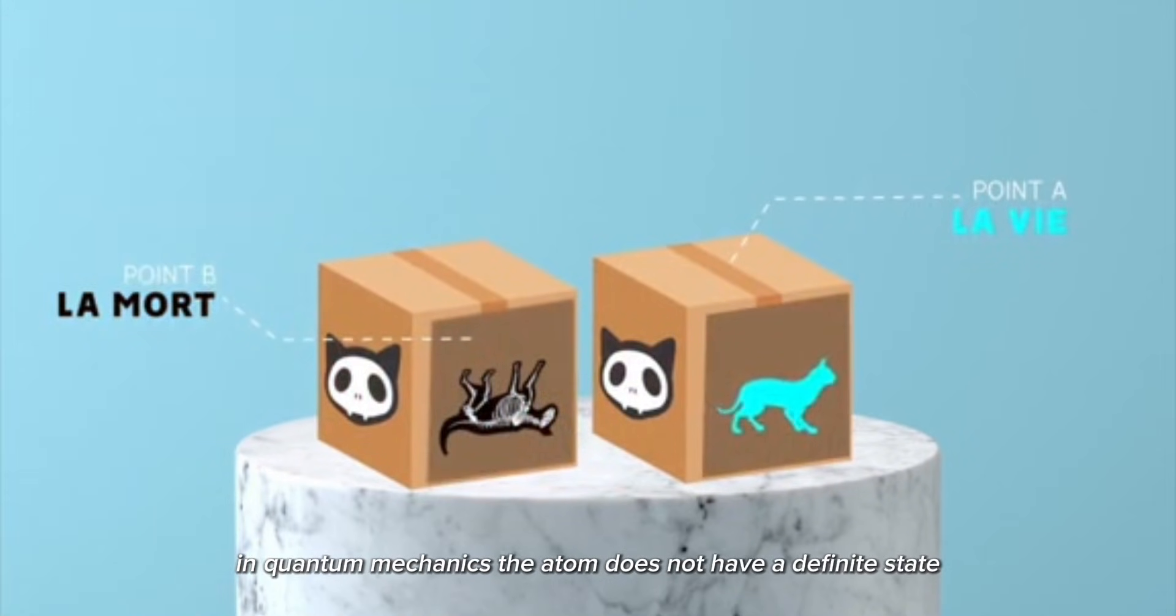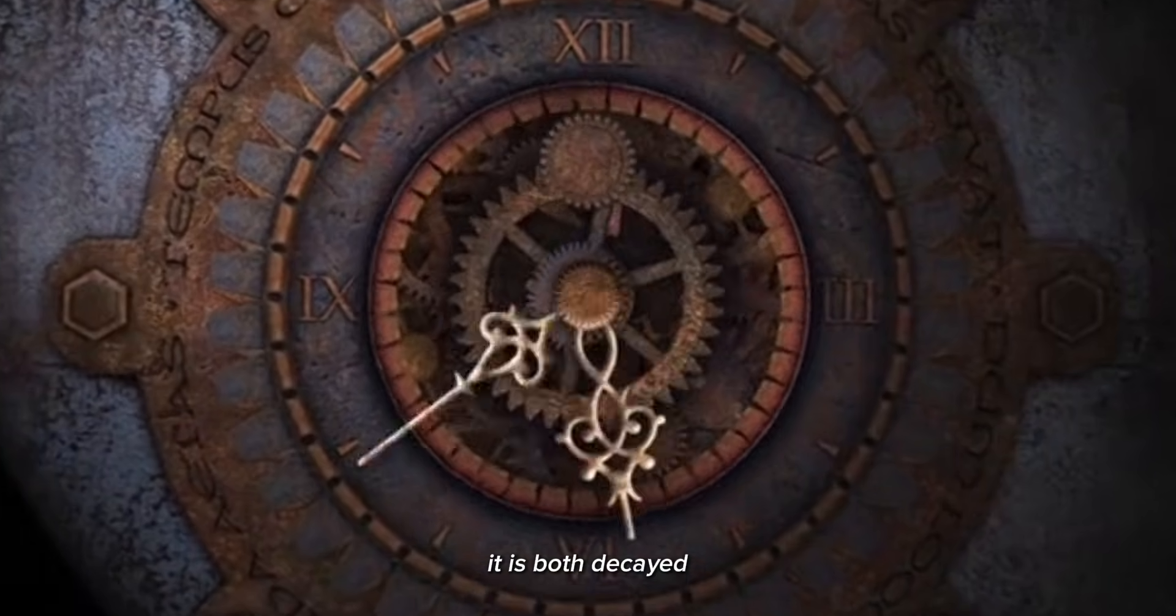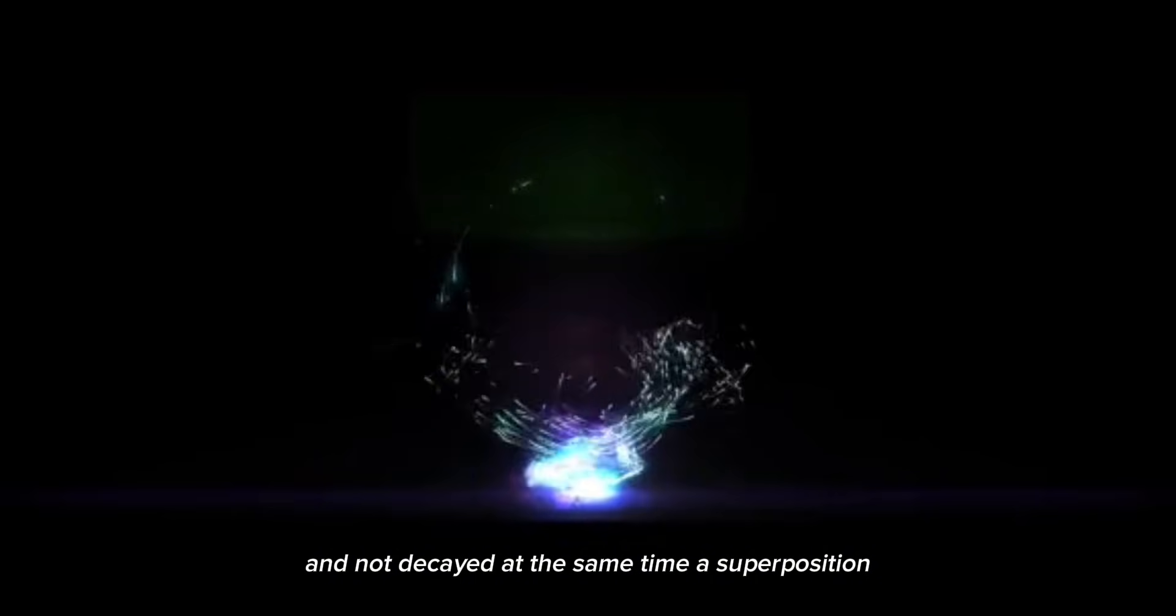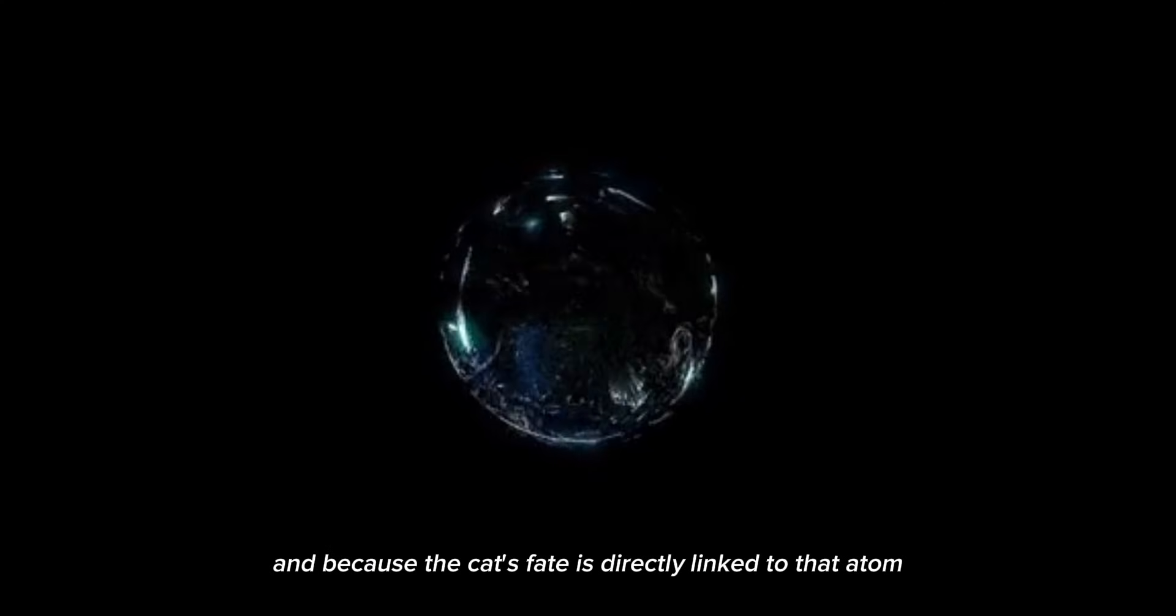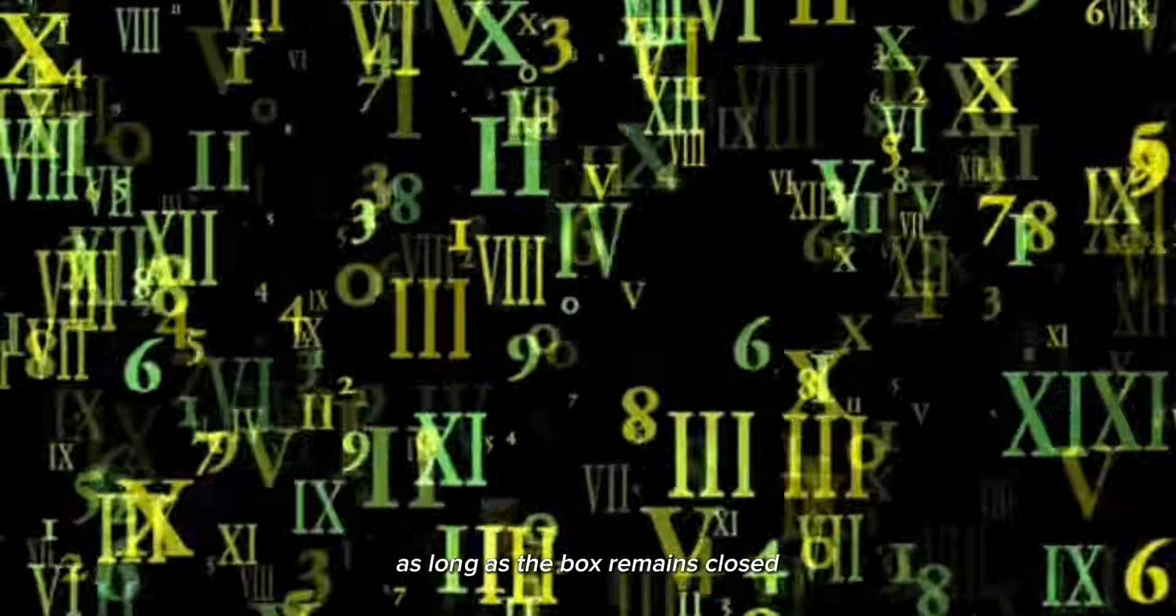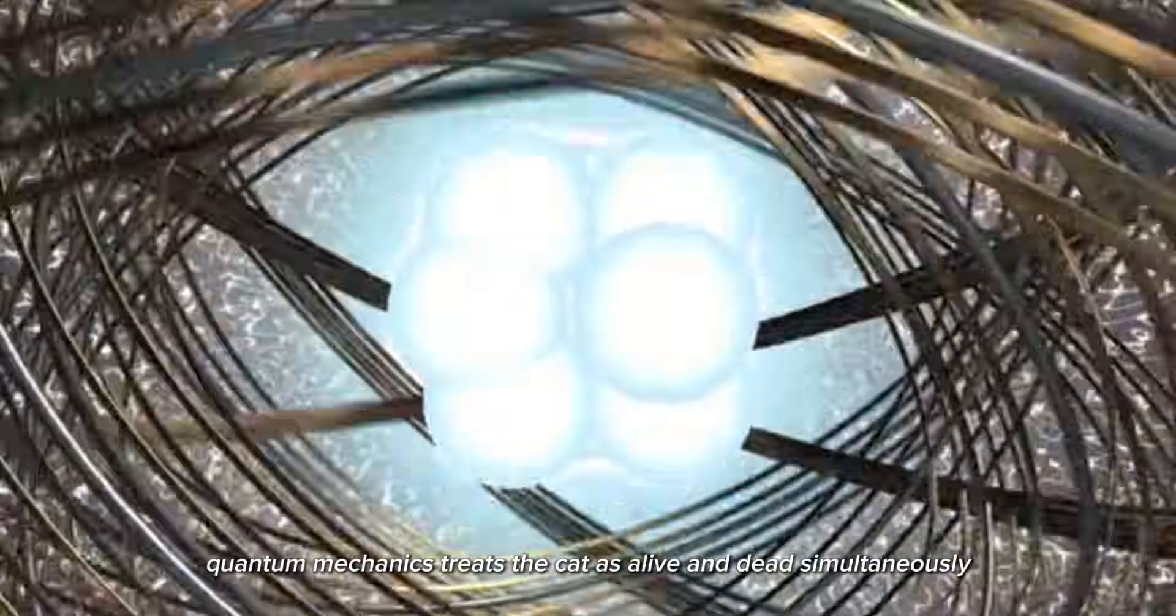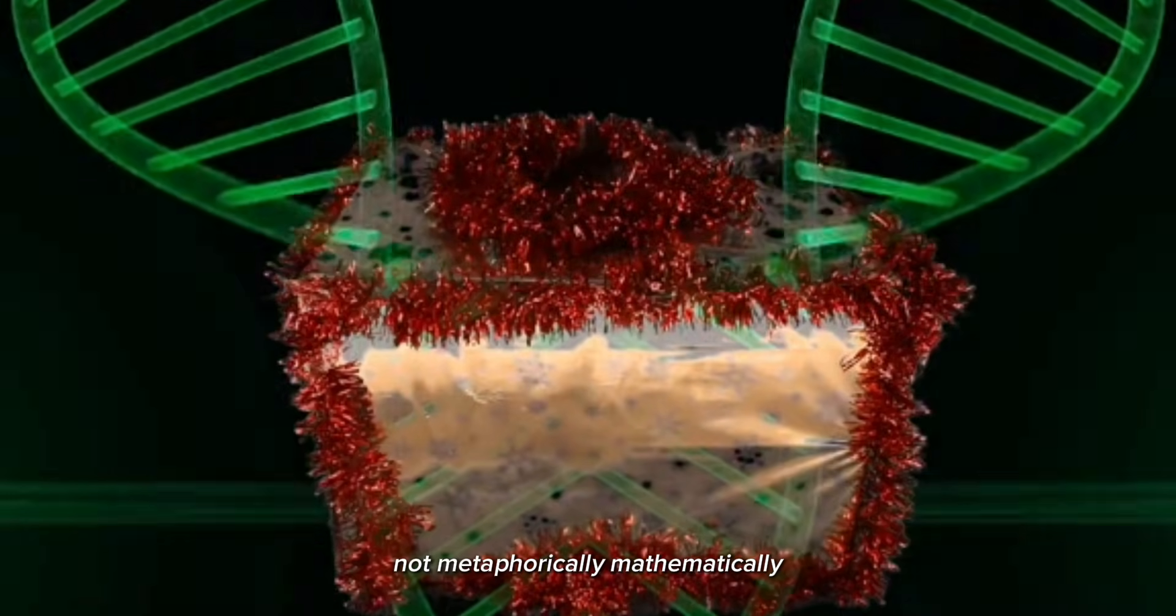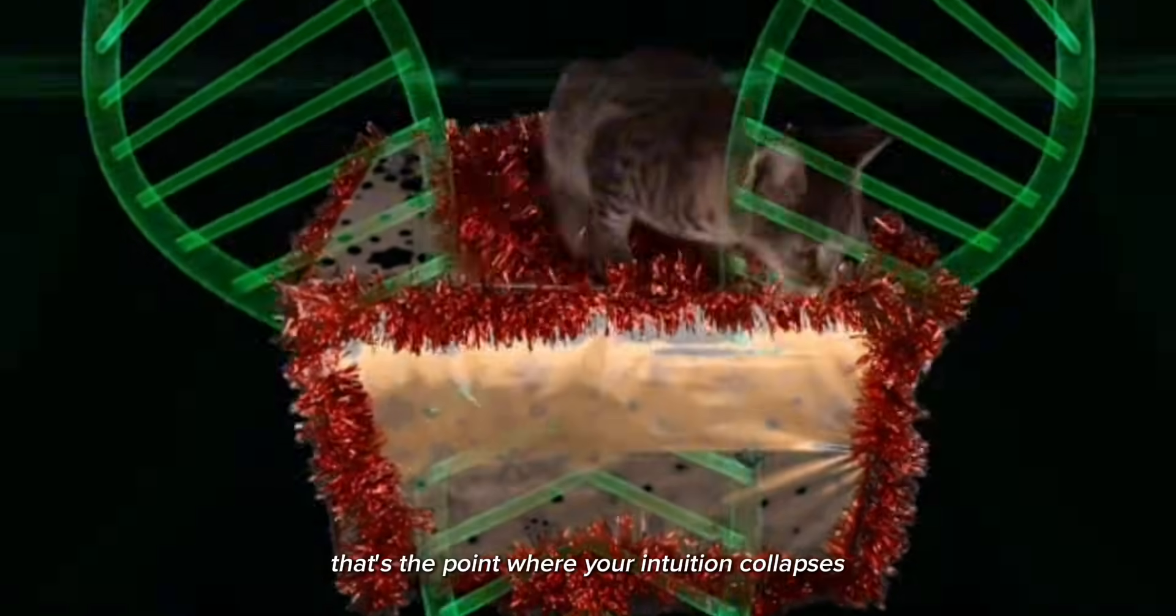But here's the problem. In quantum mechanics, the atom does not have a definite state. It is both decayed and not decayed at the same time. A superposition. And because the cat's fate is directly linked to that atom, the entire system becomes entangled. As long as the box remains closed, quantum mechanics treats the cat as alive and dead simultaneously. Not metaphorically. Mathematically. That's the point where your intuition collapses.